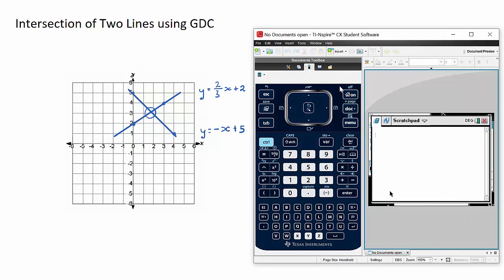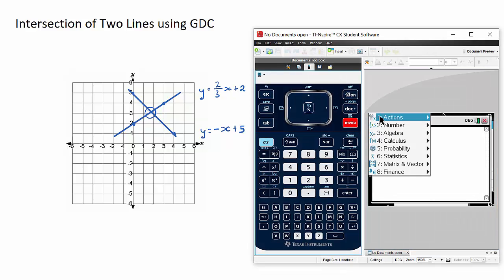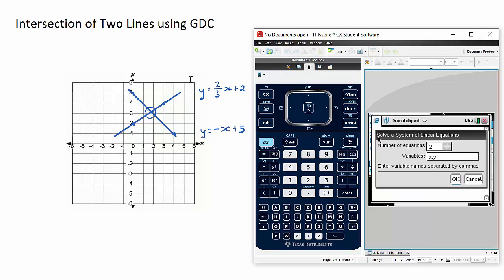So open the calculator, go to menu number three, algebra, and then number two, solve system of linear equations. Select that one. Number of equations is two - that's the number of equations that we have. The variables are x and y. Sometimes in your questions you may have a and b, but I always tend to use x and y.